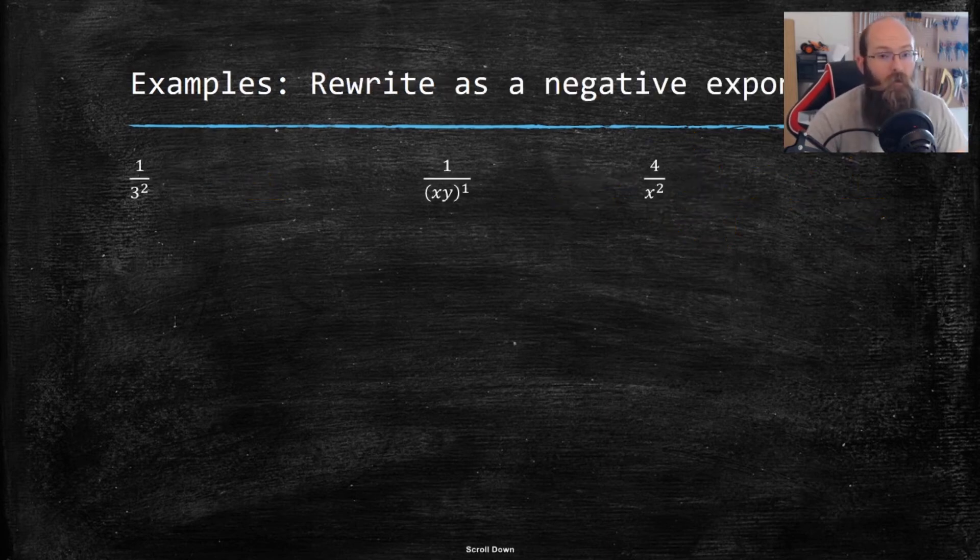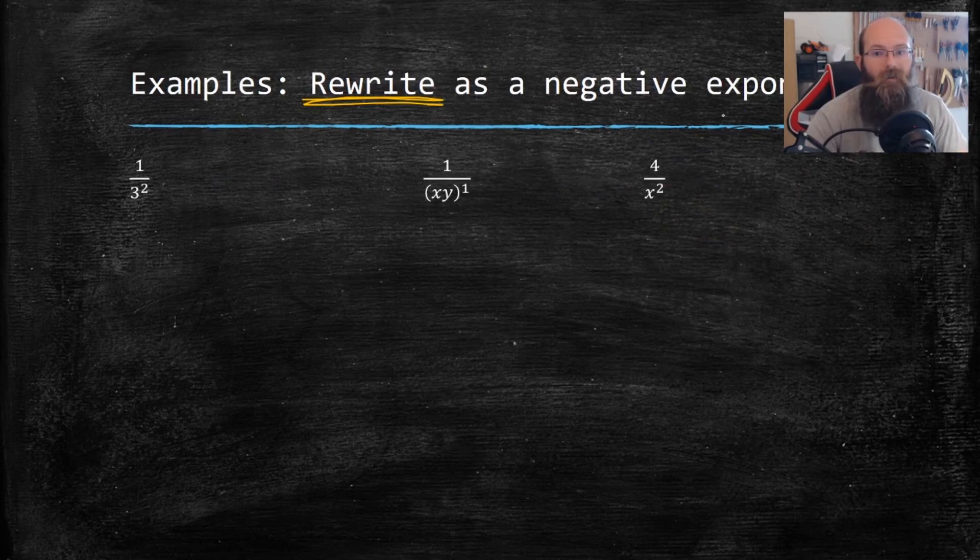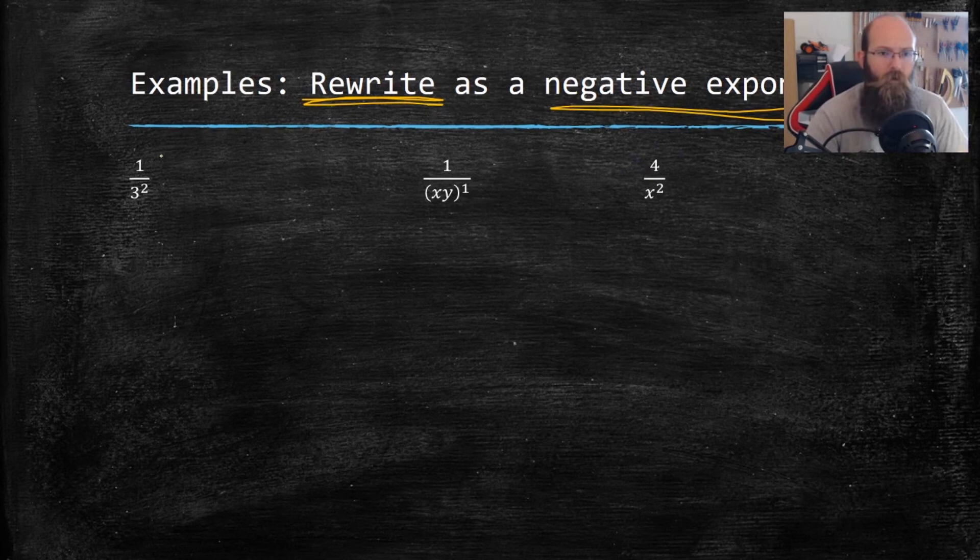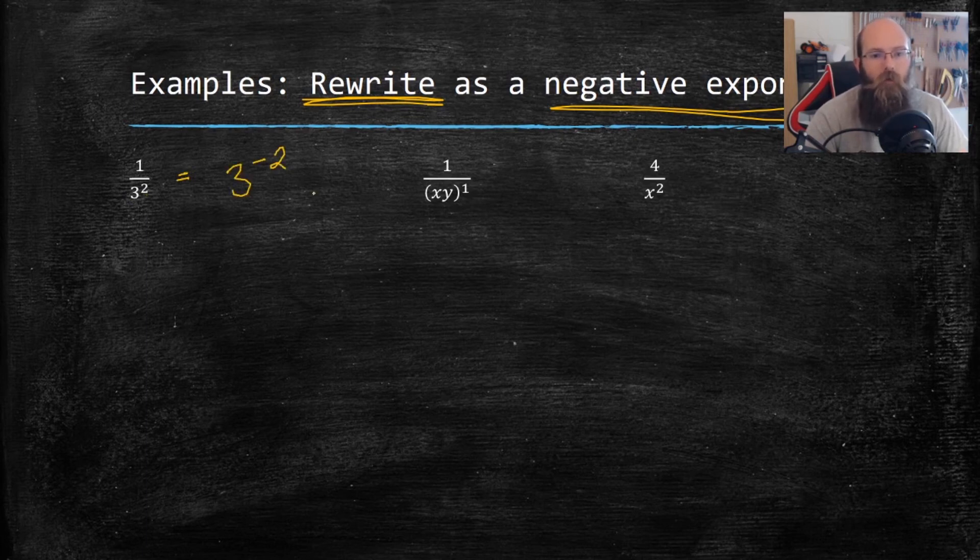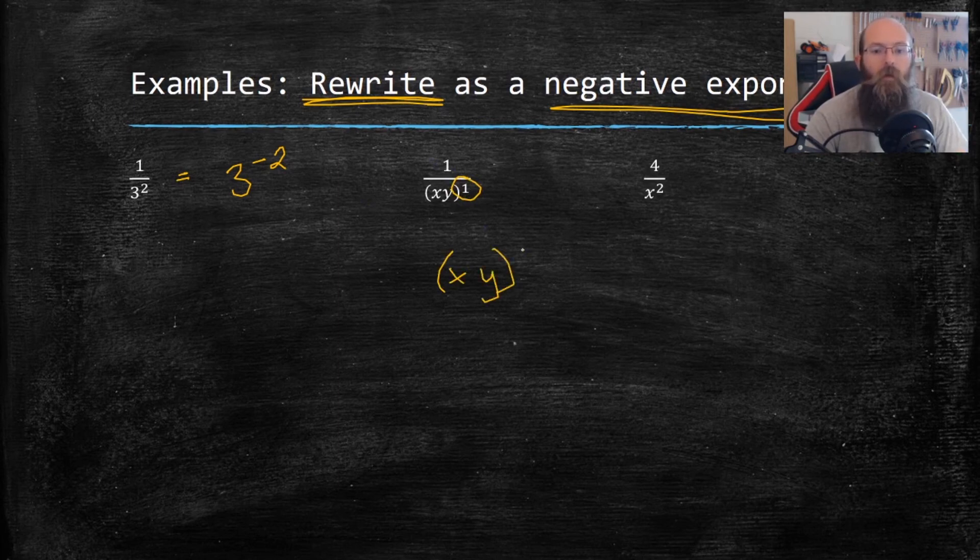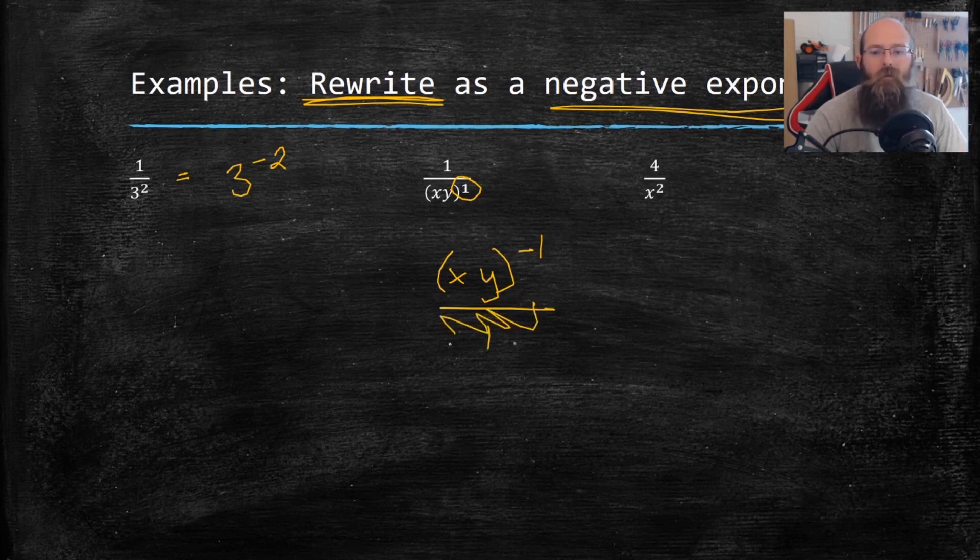My next examples get a little bit more tricky. I'm actually rewriting it as a negative exponent. So I'm given stuff with positive exponents, I want to make them negative. So over here on the left, I have one over 3 squared. I don't want that to be 3 squared, I want it to be 3 to the negative two. So I have to move it up. This next one, same situation. I have a positive one exponent in my denominator. So I need to keep my parentheses, but I need to make it a negative one. And that means it goes on top of my fraction. But I usually don't have to write that part of the fraction, then just leave it as parentheses xy parentheses to the negative one exponent.